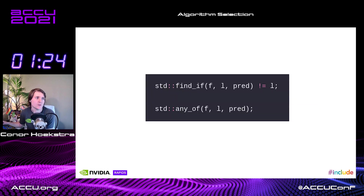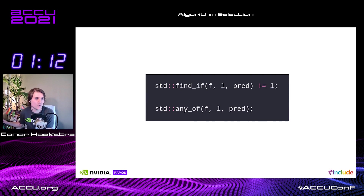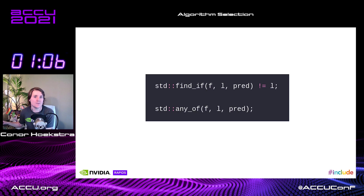The reasoning is that you should choose the most specialized algorithm because it leads to simpler and more readable code. In this example, where you're comparing an opportunity to use any_of versus find_if not equal to L — find_if is returning an iterator, and then you need to do something with that iterator in order to get the behavior you want, so it's more complicated. Whereas if you just use any_of, it returns a Boolean and communicates more clearly what you're trying to do in your code.